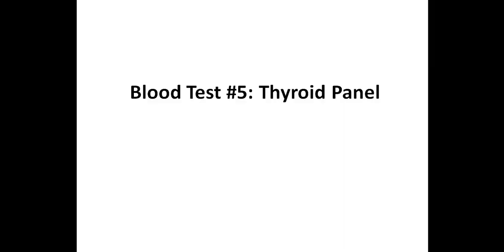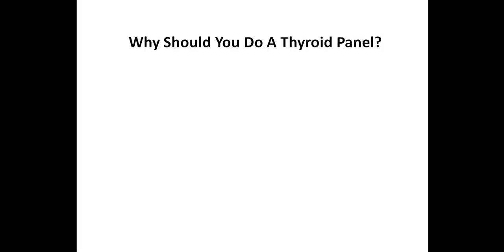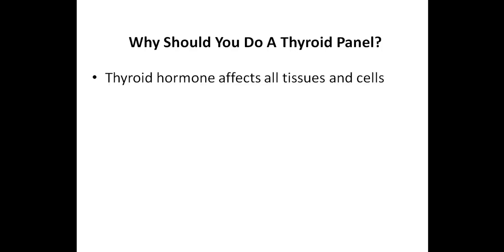Like vitamin D, thyroid hormone affects just about every cell and tissue in the body, and so even if someone doesn't have an autoimmune thyroid condition, such as Graves' disease or Hashimoto's thyroiditis, you really do want healthy thyroid hormone levels, which is why I have a thyroid panel listed as blood test number 5. The markers included in a basic thyroid panel include thyroid stimulating hormone, or TSH, free T4, as well as free T3. Some thyroid panels will include the total T3 and total T4 instead of, or in addition to, the free T3 and free T4, but I find the free thyroid hormones to be more valuable.